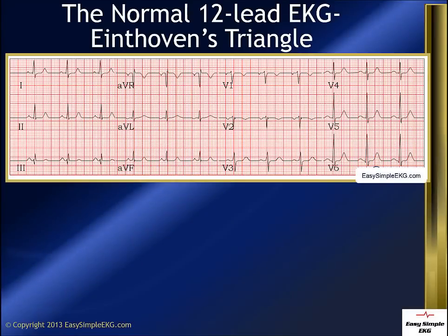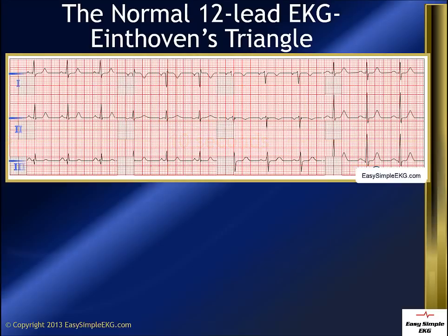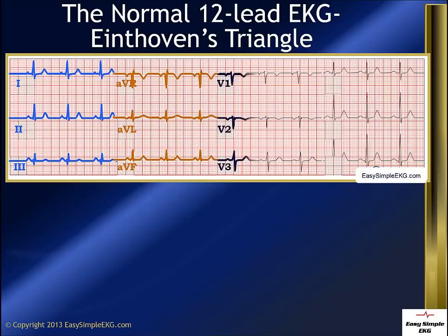A 12-lead EKG tells us all kinds of great information, so let's look at some of it. First and foremost, the 12-lead EKG is a 10-second rhythm strip. The EKG machine records three leads at a time, and every 2½ seconds it flips the channels so it is looking at three new leads. It does this until all 12 leads are recorded.